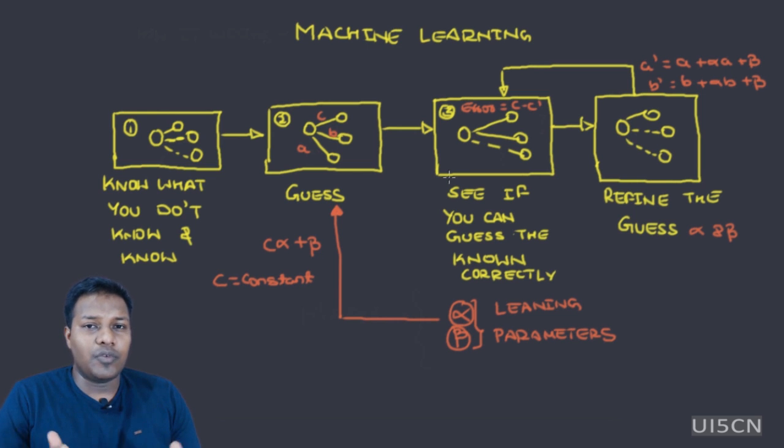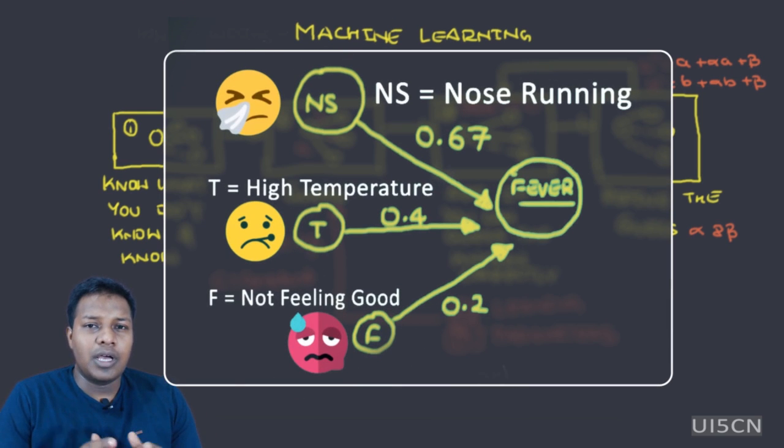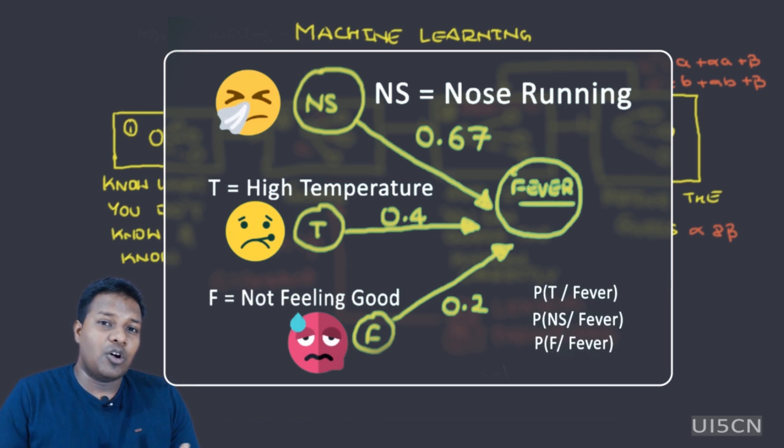For example, we saw that in the previous section there's one event which is based out of multiple events. The conditional probability of nose running is based out of multiple events, and if we can guess what is the probability of individual events, then we can also guess with correct accuracy up to a certain extent what will be the probability that you are having some fever.